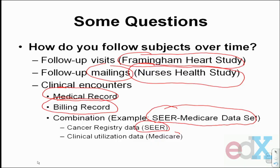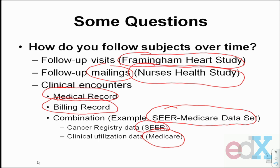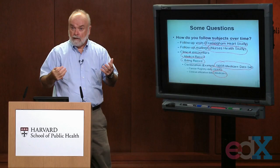The combination of clinical information from the SEER data set about your cancer and the Medicare information about what happened after you developed that cancer — how many times you were hospitalized, what treatments and outcomes you had — allows you to build a cohort using this routinely collected data. So the way we follow people in cohort studies depends in part on how easy it is to collect information on individuals.